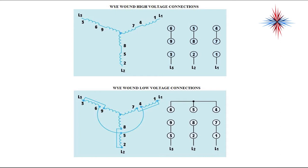So, Y high voltage connections, you would connect your wires to L2, L1, and L5. You would jump together 6 and 9, 7 and 4, and 5 and 8. It will always tell you on the label what wires you jump together. For a Y-wound low voltage connection, you're going to jump together 6 and 9, 8 and 2, 7 and 1, and then you're going to connect 4, 5, and 6 together.